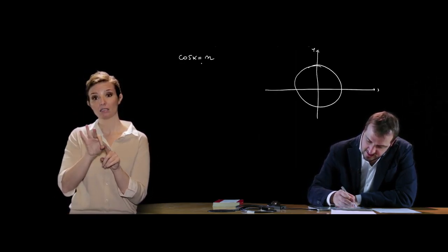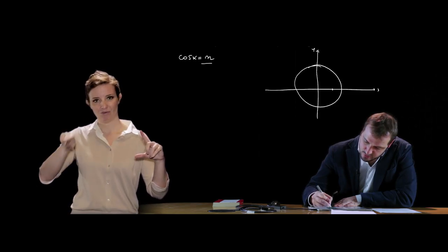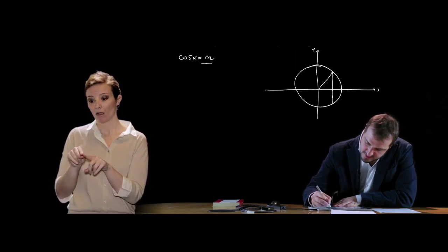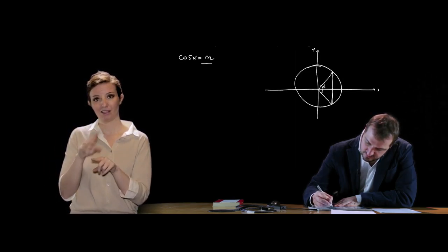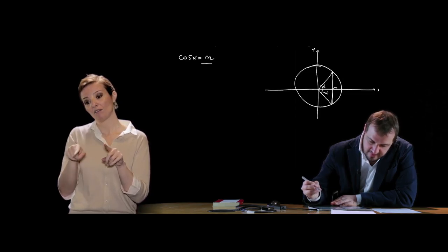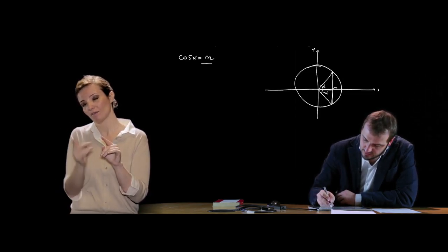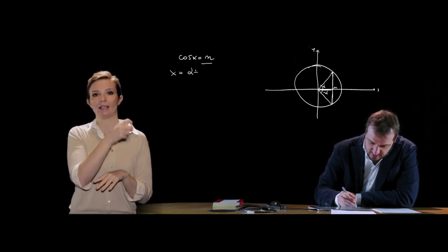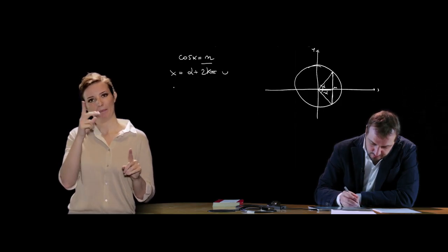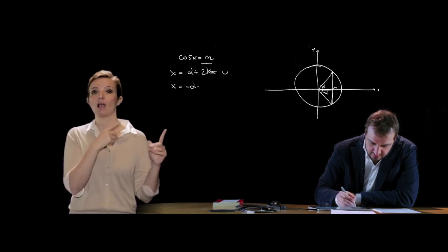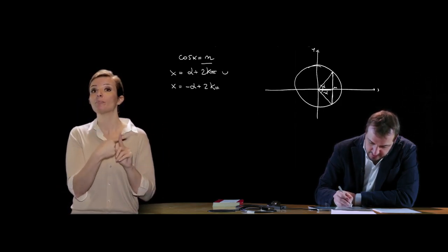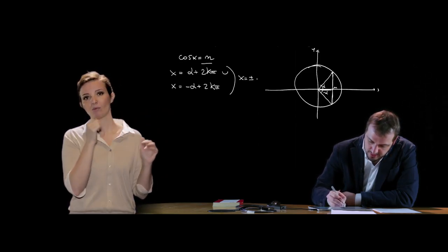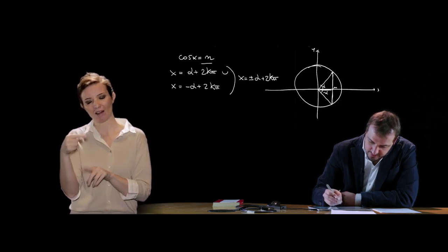Questa volta n è il coseno, quindi lo leggiamo sull'asse delle ascisse, e può corrispondere a quest'angolo α oppure a −α. Le soluzioni sono x = α + 2kπ unito a x = −α + 2kπ, che possiamo scrivere sinteticamente come x = ±α + 2kπ.